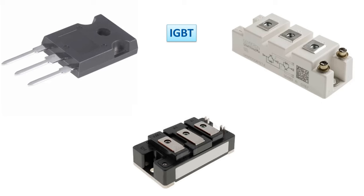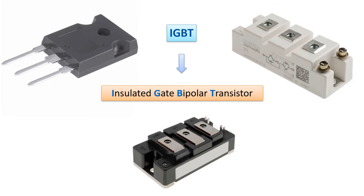Hello friends! In this video, I will explain the basic working logic of IGBTs, their features, and where they are used. The name IGBT comes from the abbreviation of the initials of the English words Insulated Gate Bipolar Transistor. It is a power electronic circuit element formed by the development of the best features of the MOSFET and BJT transistor. It appears in many areas used for switching purposes.